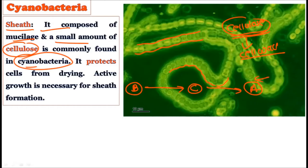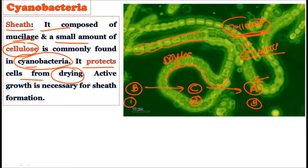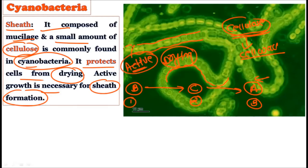We can understand this evolutionarily: bacteria do not have cellulose in their cell wall; cyanobacteria possess cellulose in their sheath; and algae have a complete cell wall made of cellulose, hemicellulose, and pectin. So we can consider this sheath later got converted into the cell wall in algae. The sheath also protects the cell from drying out.